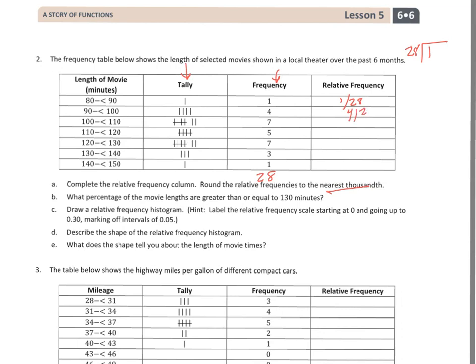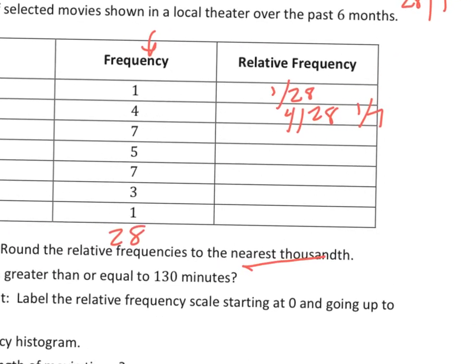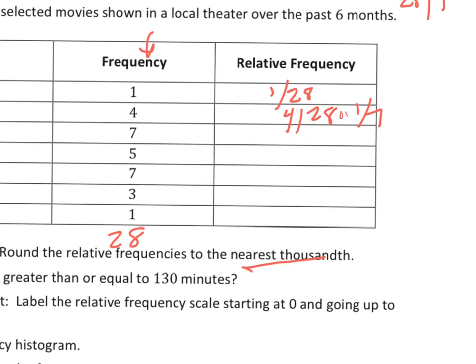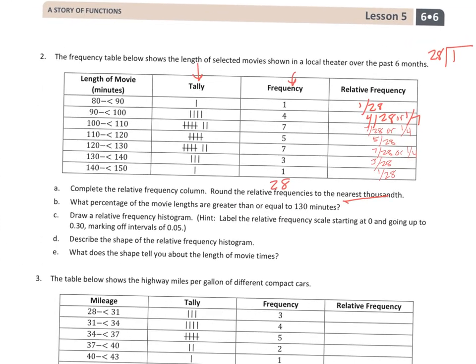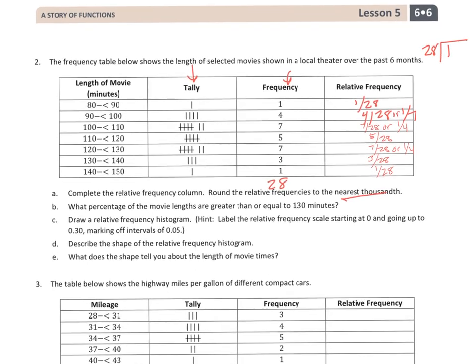So then I have four 28ths, which I know goes to one-seventh. And I might as well make this easier on myself. Then I have seven 28ths or one-fourth. Five 28ths, another seven 28ths or one-fourth, then I have three 28ths and one 28th. So there's my relative frequency, and they want those into decimals and percentages there.